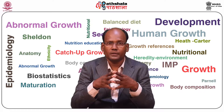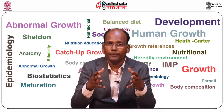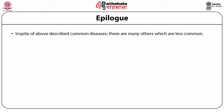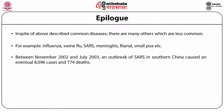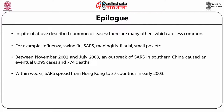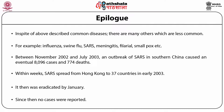In addition to the above-described common diseases, there are many others which are less common, for example influenza, swine flu, SARS, meningitis, filaria, and smallpox. Between November 2002 and July 2003, an outbreak of SARS in southern China caused 8,096 cases and 774 deaths. Within weeks, SARS spread from Hong Kong to 37 countries in early 2003, and was then eradicated by January. Since then no cases were reported.